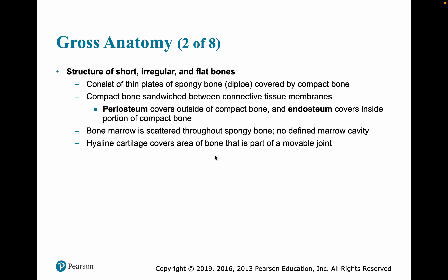Short, irregular, and flat bones have very thin plates of spongy bone covered by compact bone, and the compact bone is sandwiched between connective tissue membranes. The periosteum covers the outside of the compact bone, and the endosteum covers the inside portion. Marrow is scattered throughout the spongy bone — there is no defined marrow cavity. Hyaline cartilage covers areas of bone that are part of a movable joint.